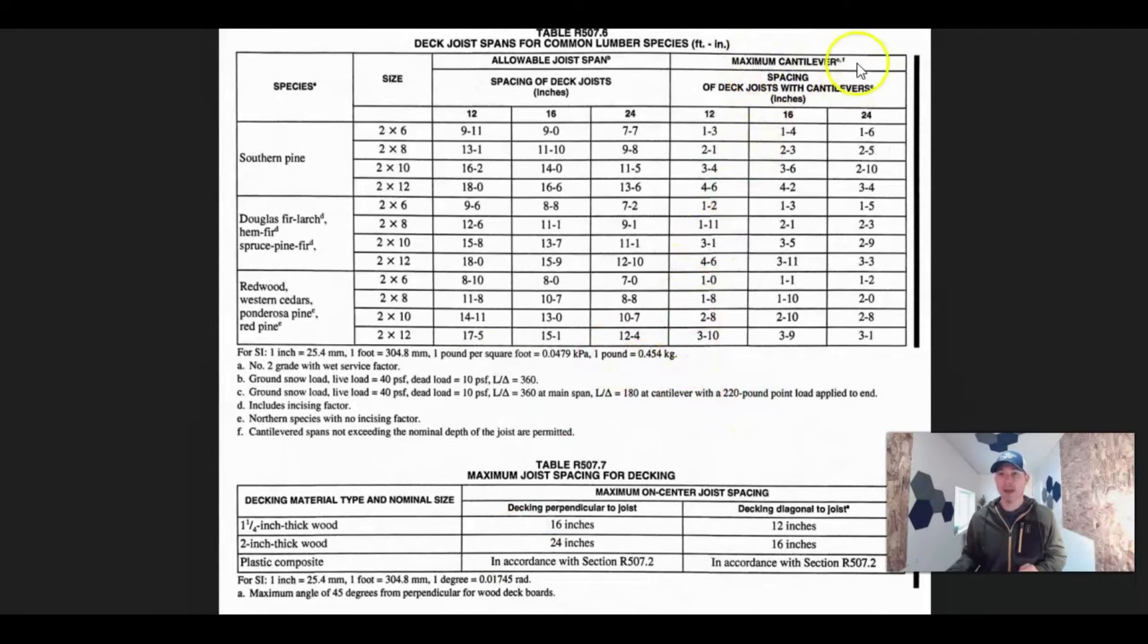This actually gives us a maximum cantilever. You don't have to do any calculations for it. We had decided we were going to go with Doug fir, we were going to go with two by eights at 16 inches on center for a max span of 11 foot one. But then if you scroll over to here, it says maximum cantilever spacing of deck joists with cantilevers. So we have 16. And if we follow our two by eight line all the way over, it's telling us that we can cantilever two foot one.